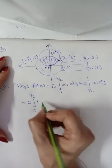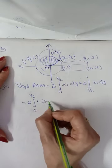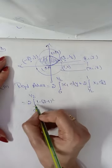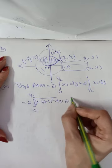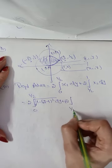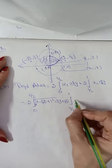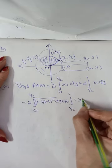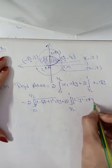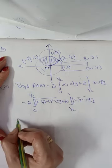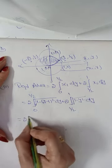The integral becomes: twice of ∫₀^(1/2) √(1 - (y-1)²) dy + twice of ∫_(1/2)^1 √(1 - y²) dy, using the same standard formula for both.